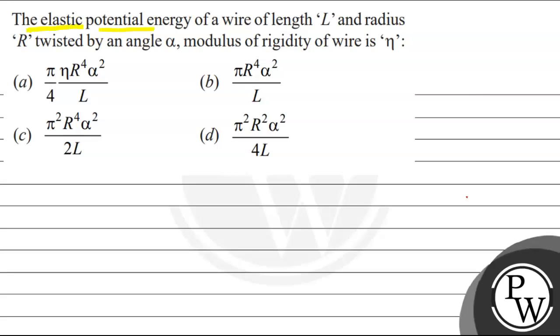The question says the elastic potential energy of a wire of length L and radius R twisted by an angle alpha, modulus of rigidity of wire is eta. The options are: pi eta R to the power 4 alpha square by 4L, pi R to the power 4 alpha square by L, pi square R to the power 4 alpha square by 2L, and pi square R to the power 2 alpha square upon 4L.